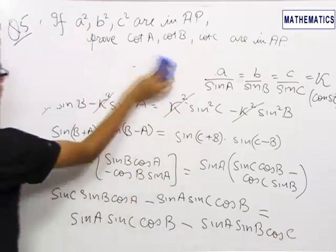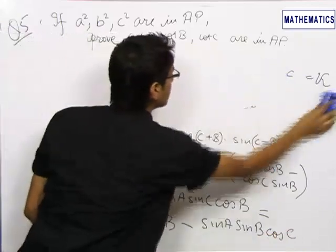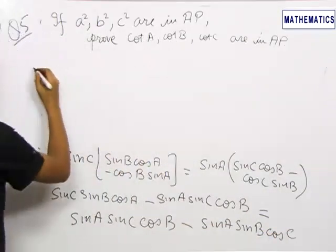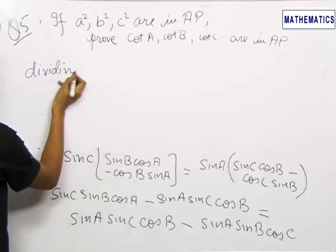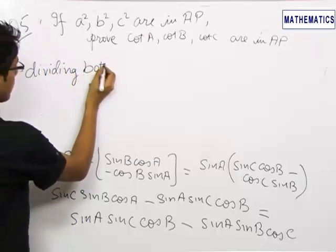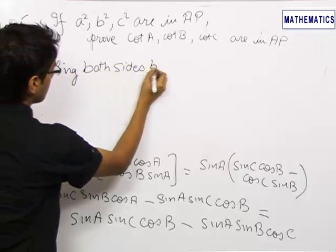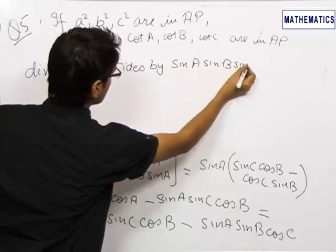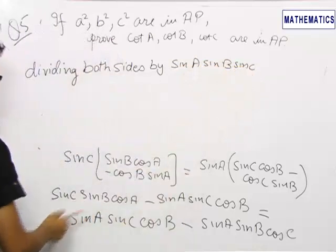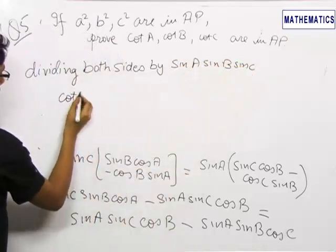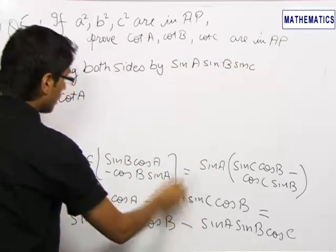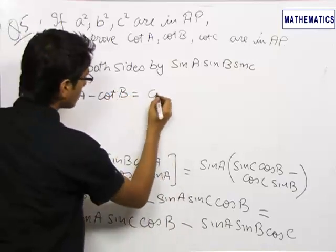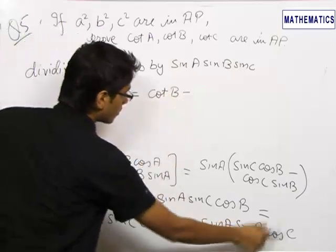Now very obviously, if we divide the left hand side and the right hand side by sin A sin B sin C, this sin A sin B will get cancelled out, we will get cot A, here we will get cot B equals here again cot B. And here cot C.